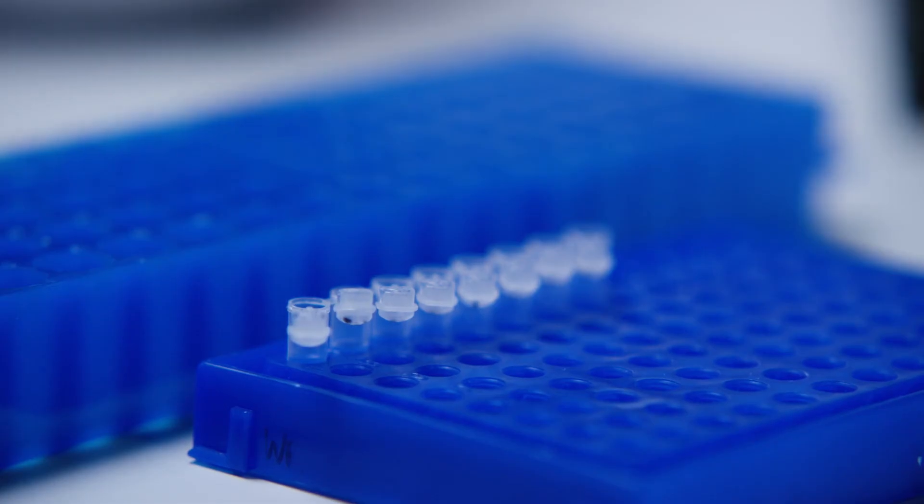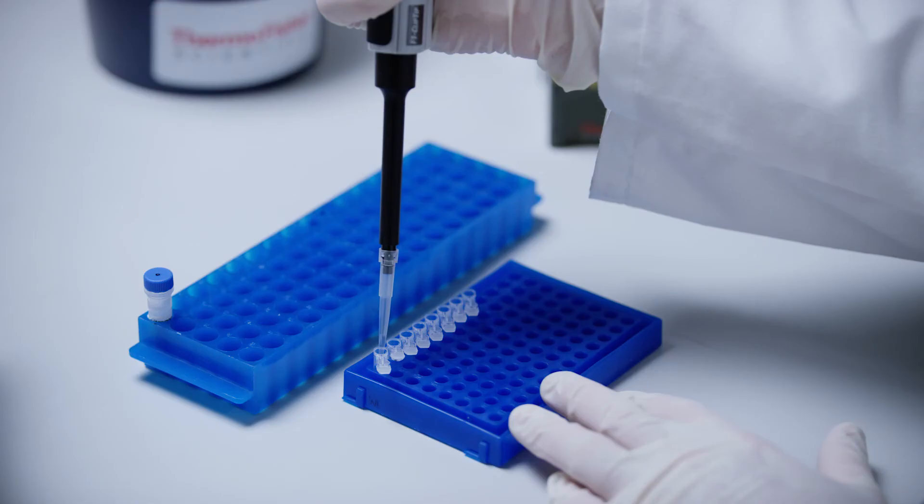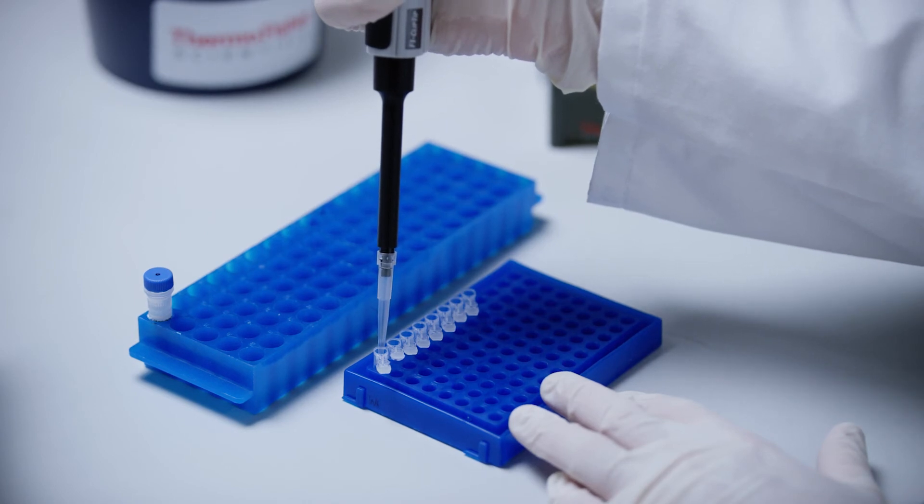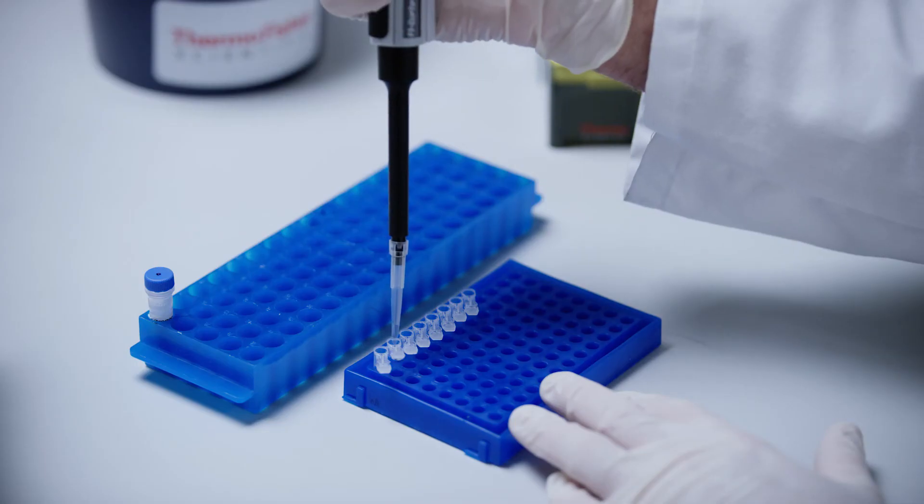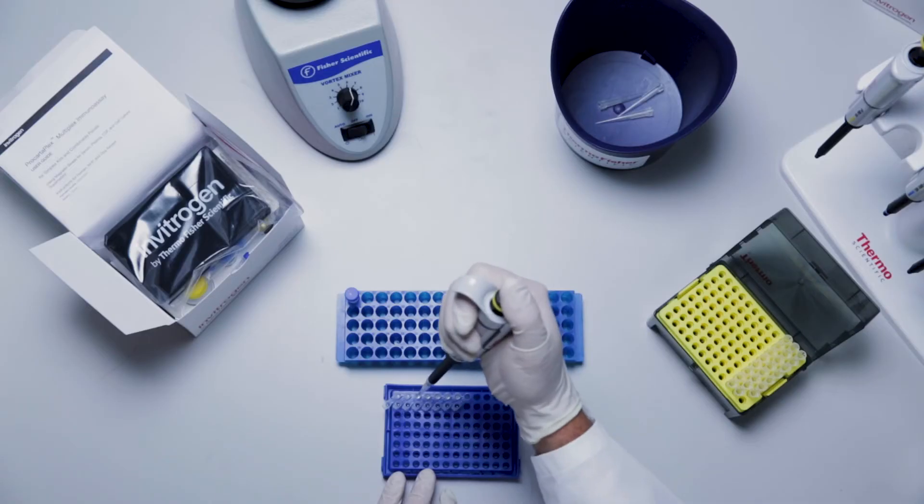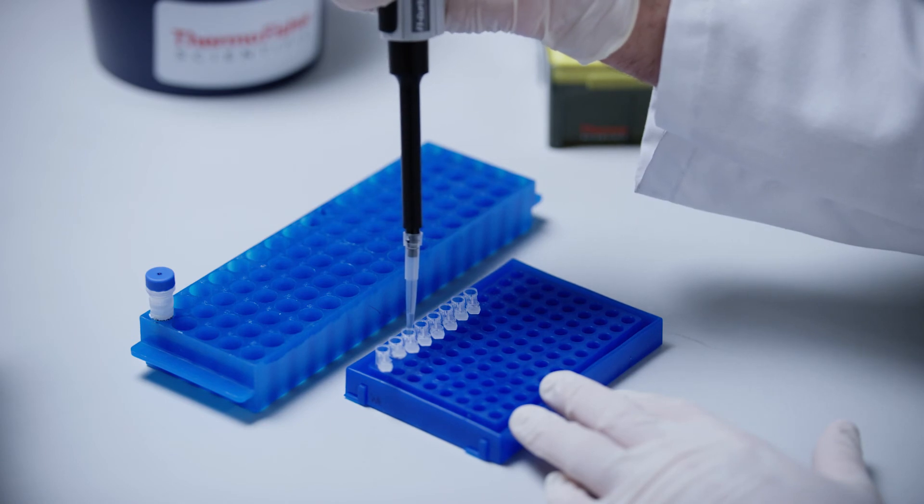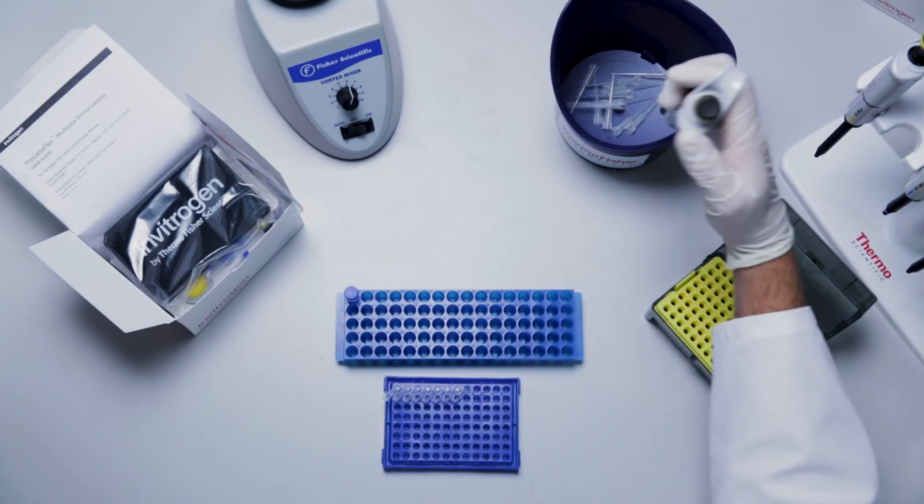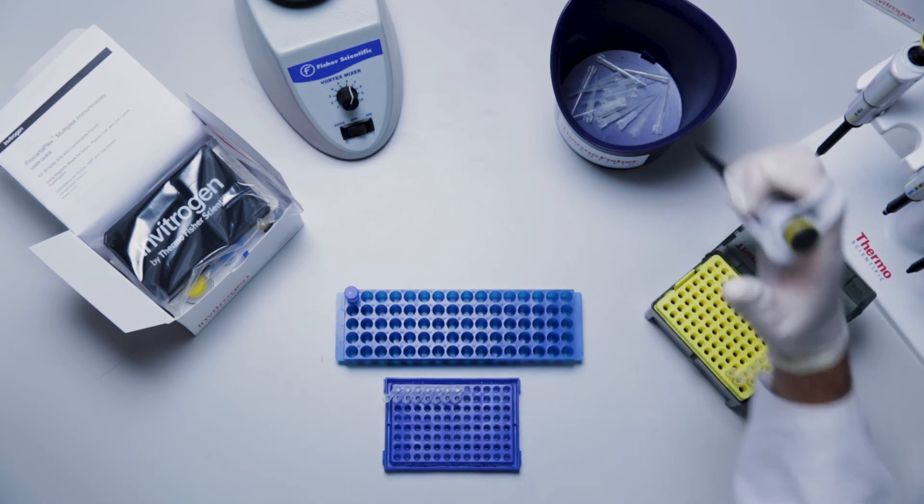Transfer 50 microliters of the mixed antigen standard from standard tube 1 into standard tube 2, mix by pipetting up and down 10 times while changing tips between each tube. Transfer 50 microliters from standard tube 2 into standard tube 3, mix by pipetting up and down 10 times. Transfer 50 microliters from standard tube 3 into standard tube 4, mix by pipetting up and down 10 times. Repeat these steps for the tubes labeled standard 5 through standard 7.